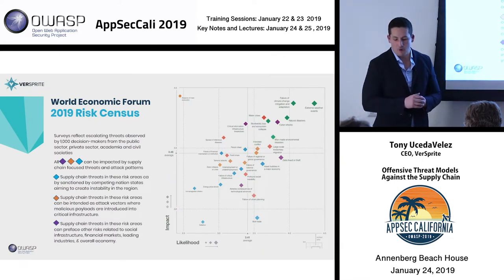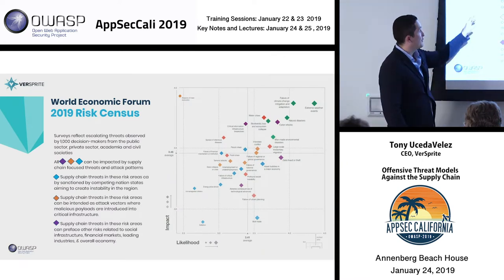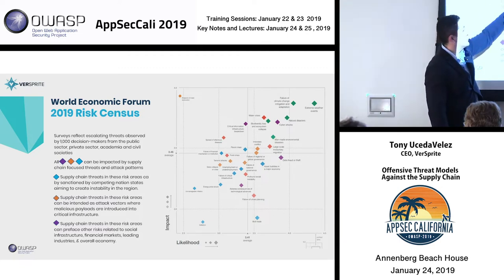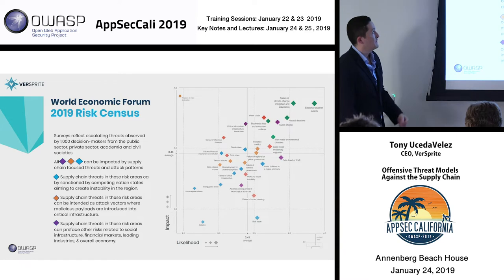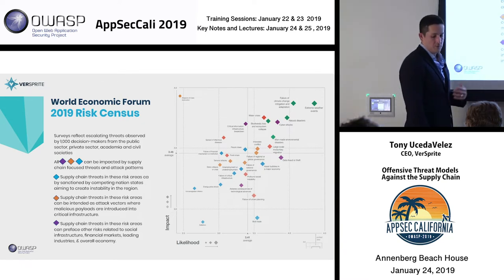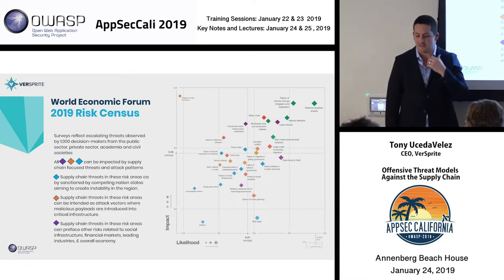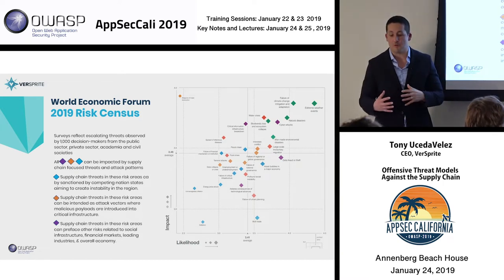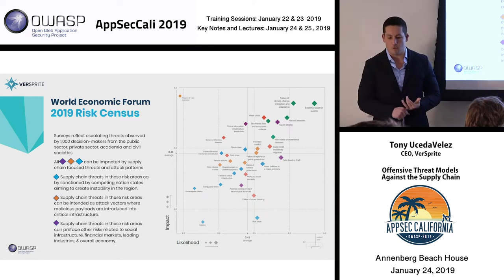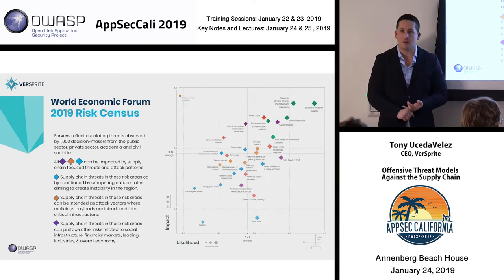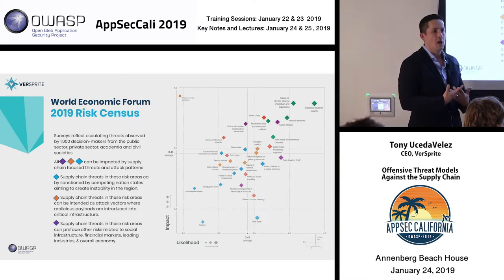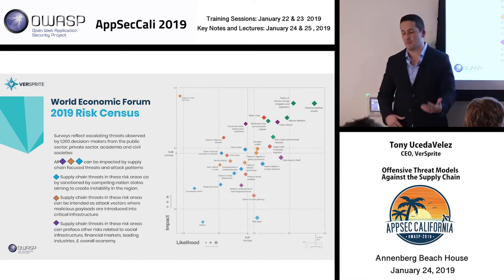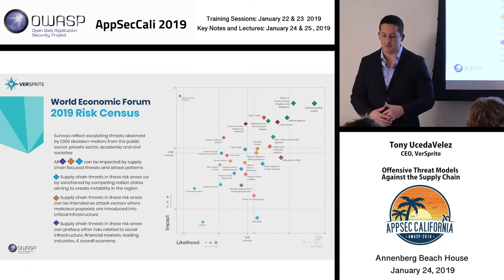The World Economic Forum provides data — I'm going to look at these three triangles here: the purple, the orange, and the blue. This is a 2019 risk census where thousands of companies were asked about their global risk concerns. Multiple sources contributed to this data — the World Economic Forum, Allianz, and major international insurance companies that insure businesses for different types of risk, from cyber to continuity risk.